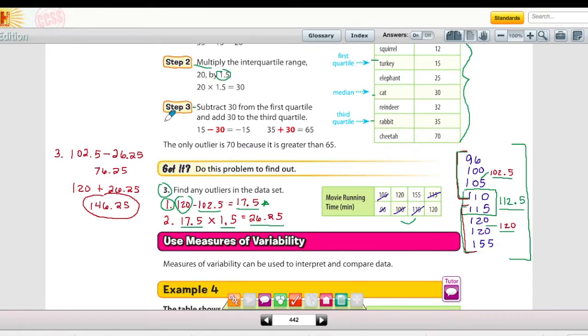Then step three, it says to take the first quartile minus 26.25 and I got 76.25. And then it says to take the third quartile plus the interquartile range. And when I did that, I got 146.25. So my data should be between 76.25 and 146.25. And from that information, I see that 155 lies on the outside of that range. And so 155 is our outlier.